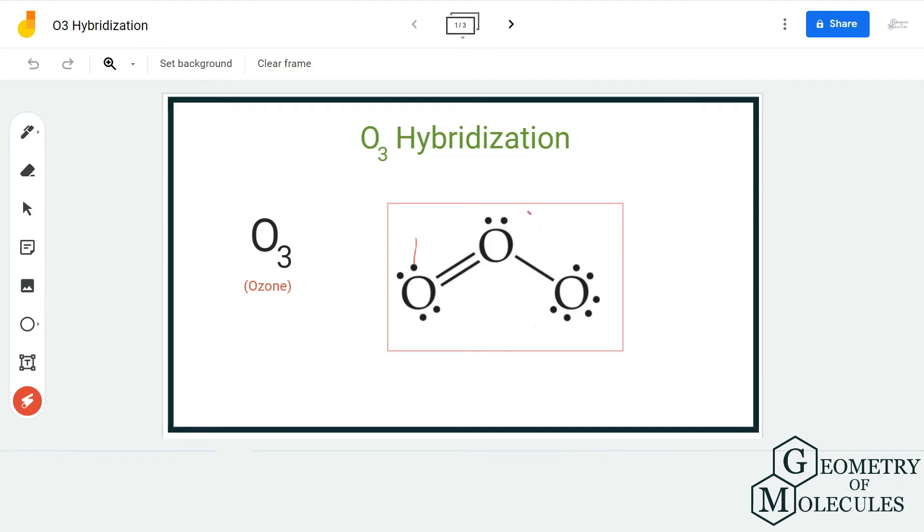there are three oxygen atoms forming bonds, of which this is the central oxygen atom forming a double bond with this oxygen and a single bond with this oxygen. Now when it comes to hybridization, the